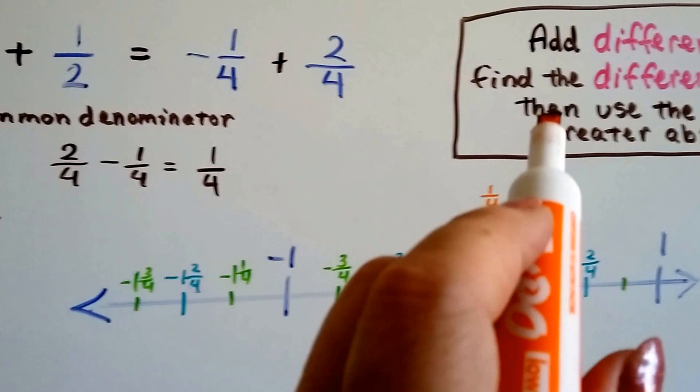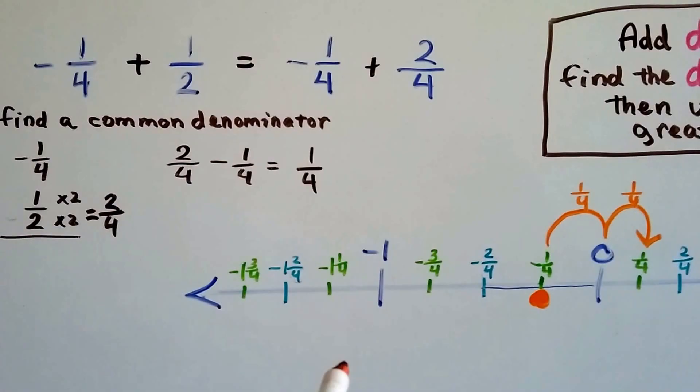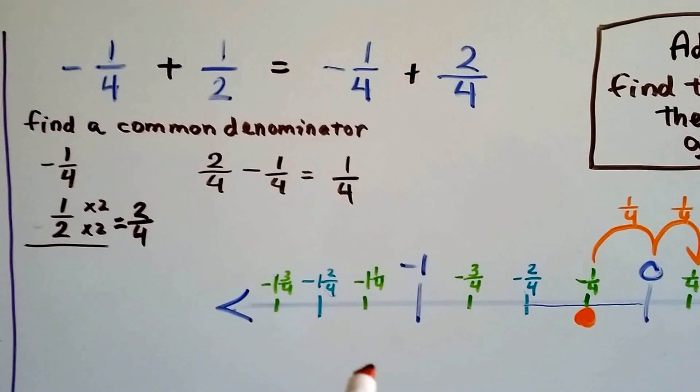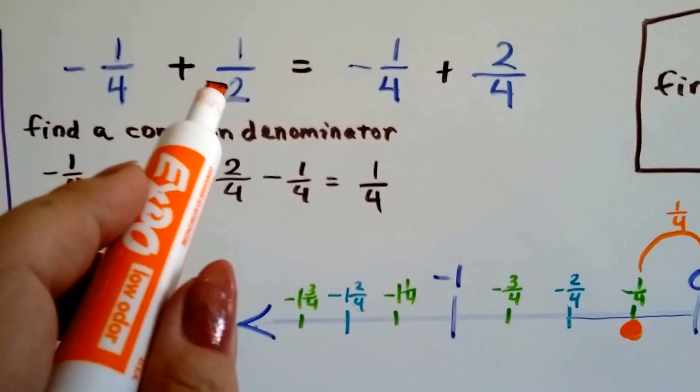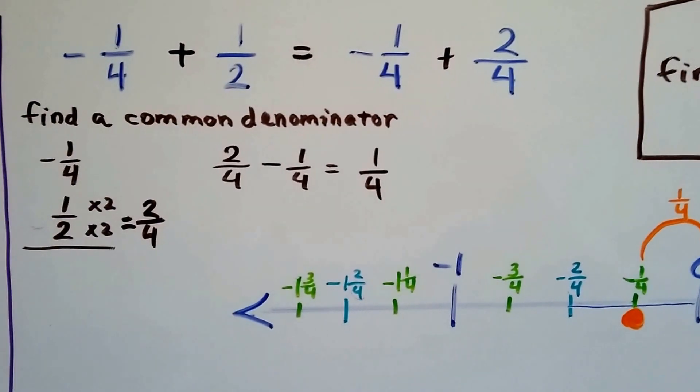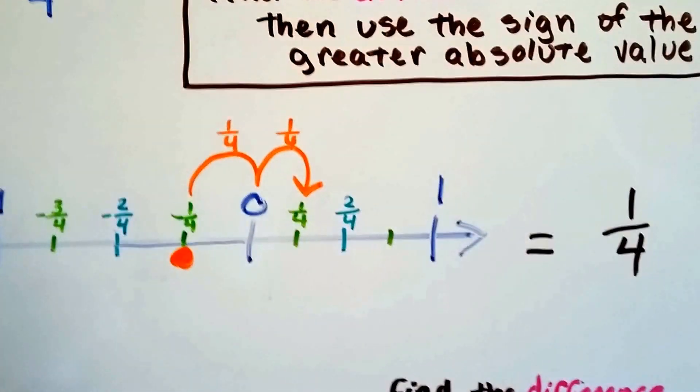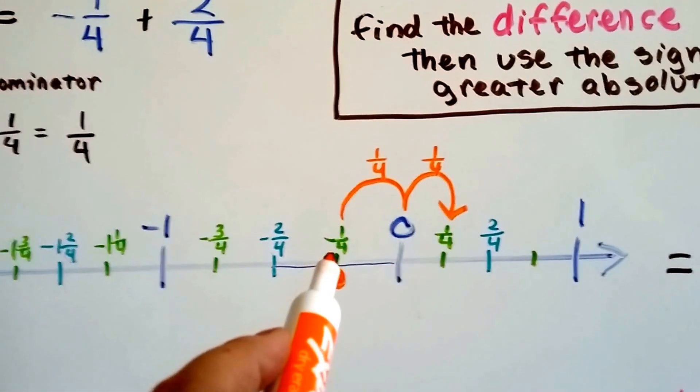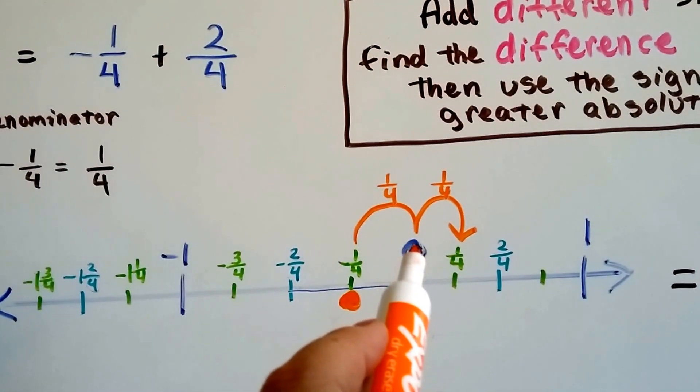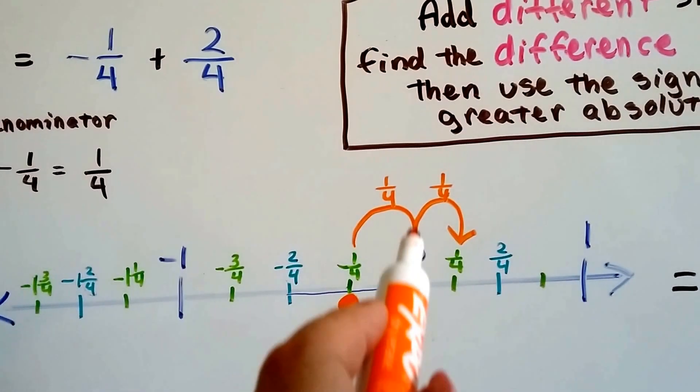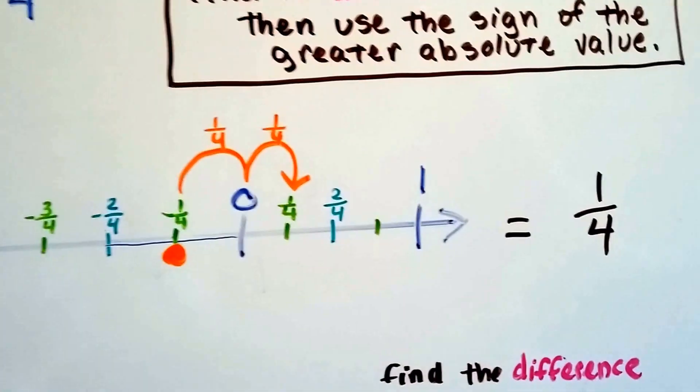And because the signs are different, we take the 1 of the larger absolute value. And which is farther away from 0 on the number line? A fourth or a half? Well, actually the half is. So, it's going to become a positive fourth. So, here's what it would look like on the number line. We would start at the 1 fourth. And we're going to add 2 fourths. 1 fourth added would bring us to the 0. And adding another fourth would bring us to the positive fourth. And our answer is positive 1 fourth.